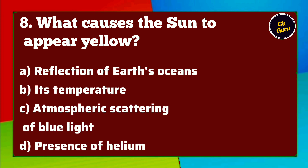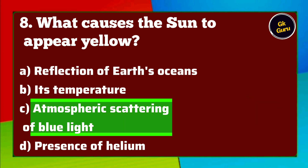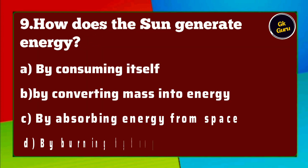What causes the sun to appear yellow? A. Reflection of Earth's oceans B. Its temperature C. Atmospheric scattering of blue light D. Presence of helium. Answer C. Atmospheric scattering of blue light.